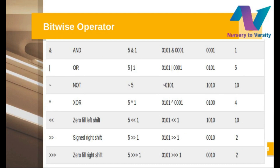The next one is the bitwise operator. The first bitwise operator is AND. Whenever you write 5 AND 1 — we write 5 in binary form as 0101, and 1 as 0001. Applying the AND operator: 0 AND 0 = 0, and it only gives us 1 when both inputs are 1 and 1. In all other cases we get 0. So applying AND on 0101 and 0001, we get 0001, and the answer is 1.